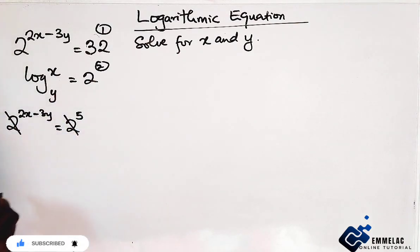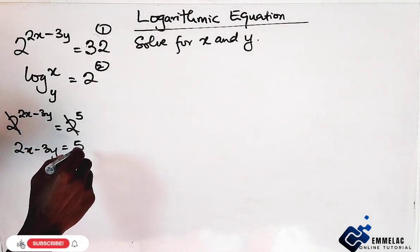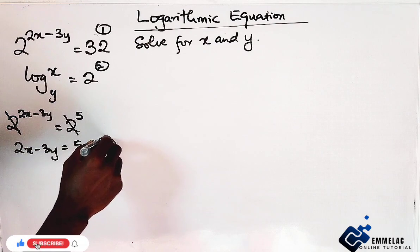We can now eliminate the two bases since they are the same. Here we have 2x minus 3y equals to 5, so we can make this equation 3. Now, I'm bringing this also, reducing it to a simple algebraic expression.